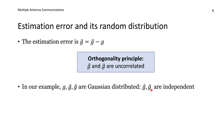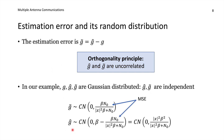Since g-tilde is Gaussian distributed with the MSE as its variance, we can write its distribution directly. Since g-hat and g-tilde are independent, the sum of their variances equals the variance of the original variable g, which is beta. This means g-hat has variance equal to beta minus the MSE. These two distributions are useful for analyzing estimation error and estimates in wireless communications without having to generate y and scale it — we can directly generate random realizations of the estimate and the corresponding estimation errors.